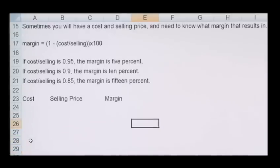Alternatively, we may have a cost price and the selling price and want to calculate what margin this is. So the formula for this is: margin equals 1 minus the cost divided by the selling price, times 100 to get your percentage.